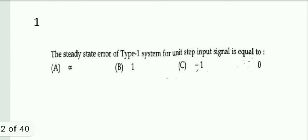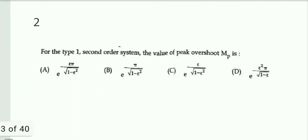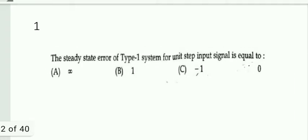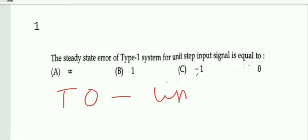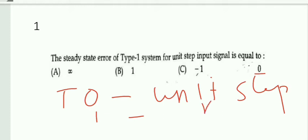The first question is: the steady-state error of a type 1 system for a unit step signal is equal to what? For this type of question, we need to know the error table starting from type 0. For a type 0 system, only the unit step has error. For type 1, the unit ramp has error. For type 2, the unit parabola has error.